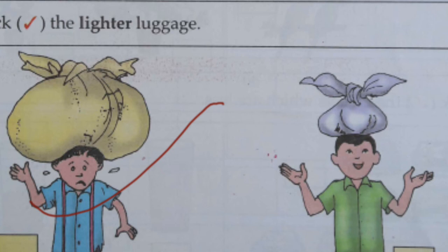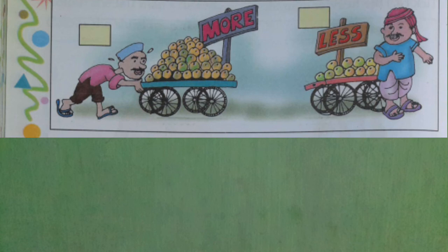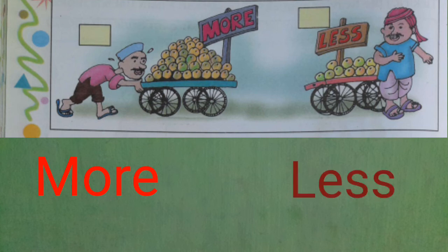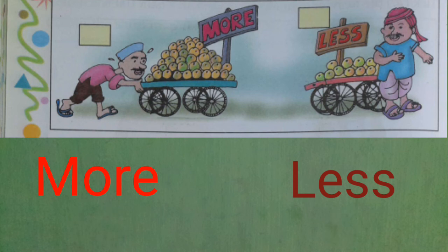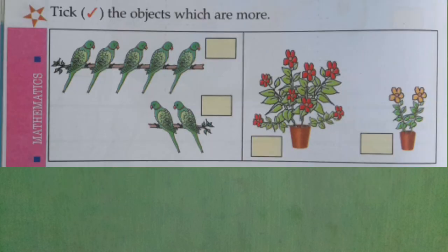Next, we will compare between quantity — more or less. You see the mangoes. Left side has more mangoes and right side has a less amount of mangoes. Suppose two numbers: ten and five. Ten is more and five is less. You see the picture of parrots — there are five parrots and there are two parrots. Which is more? Which is less? Five is more and two is less.